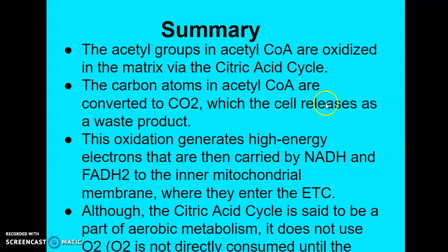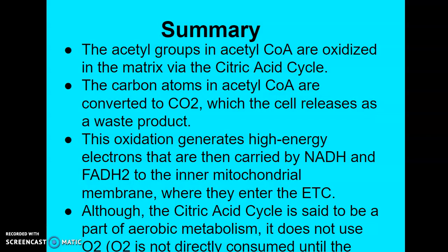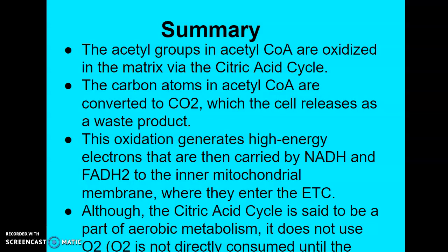To summarize: the acetyl groups in acetyl-CoA are oxidized in the matrix via the citric acid cycle. The carbon atoms are converted to carbon dioxide, which the cell releases as waste. This oxidation generates high-energy electrons carried by NADH and FADH2 to the inner mitochondrial membrane, where they enter the electron transport chain. Although the citric acid cycle is part of aerobic metabolism and needs the presence of oxygen, it does not use oxygen directly — oxygen is not consumed until the electron transport chain, where it serves as the final electron acceptor. But oxygen is still needed to allow NADH to get rid of its electrons. That's it, and we'll finish up with the electron transport chain in the next video.